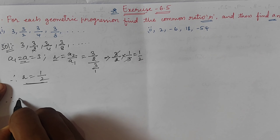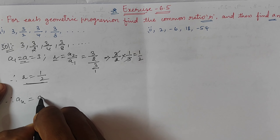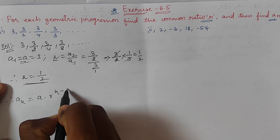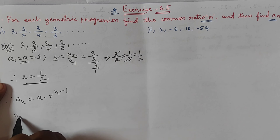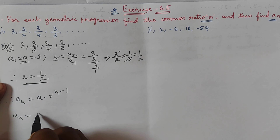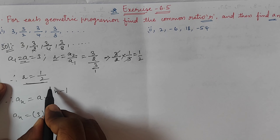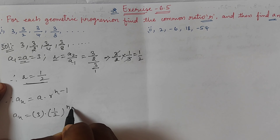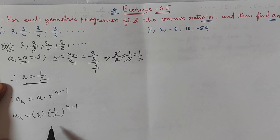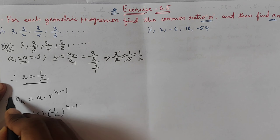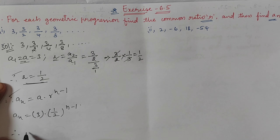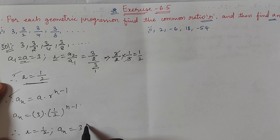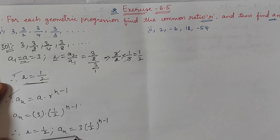For the nth term: aₙ = a·r^(n-1) = 3 × (1/2)^(n-1). Therefore r = 1/2 and aₙ = 3 × (1/2)^(n-1).